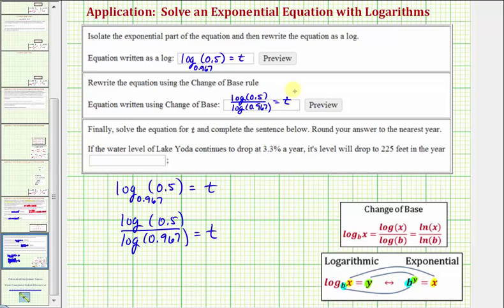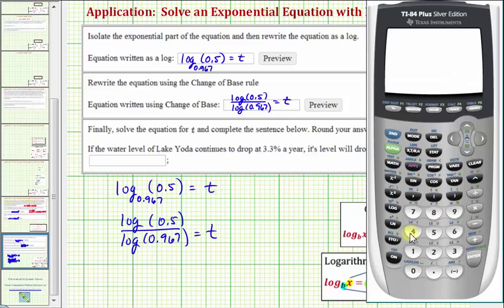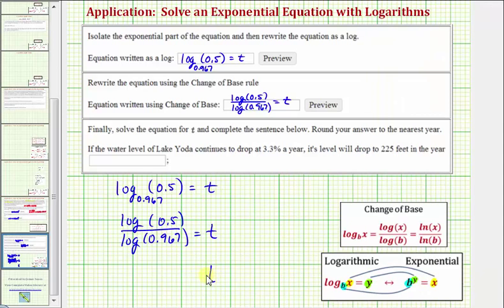And now for the last step, we want to solve the equation for t and complete the sentence below. We're asked to round to the nearest year. So now we'll go to the calculator and evaluate the quotient of these two common logs to approximate the value of t. So we have the common log of 0.5, close parenthesis, divided by the common log of 0.967, close parenthesis and enter. For the nearest year, we would say t is approximately 21.